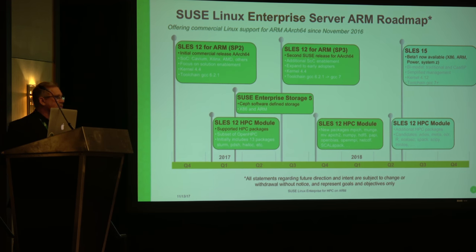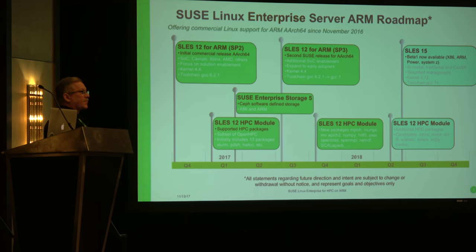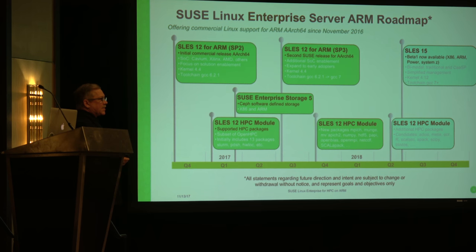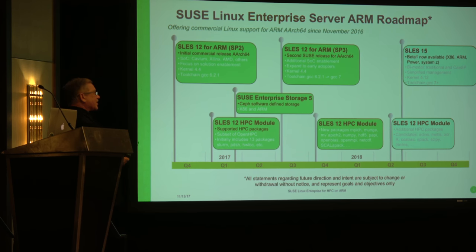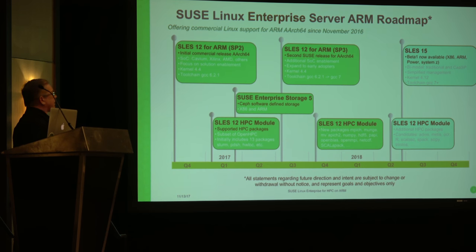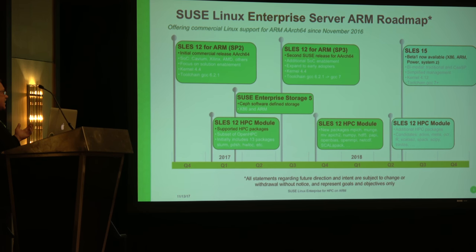In August we released our second major release of SUSE Linux Enterprise for ARM — Service Pack 3 — and that's very important because it picked up the Cavium ThunderX2 as well as the Qualcomm Centriq 2400 and a few other SOCs. We kept the same kernel version and have been doing quite a few back-ports to support that. And today we announced additional updates to the HPC module.